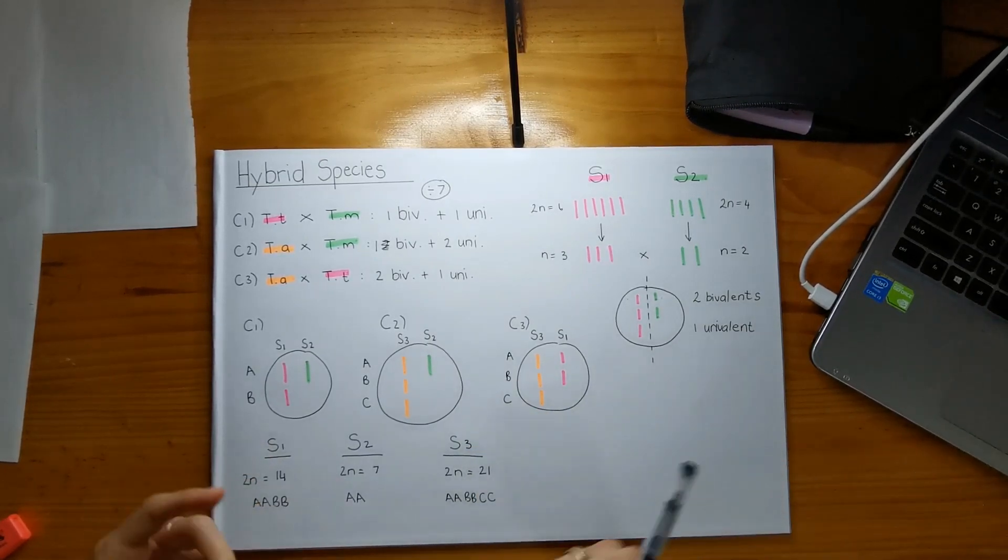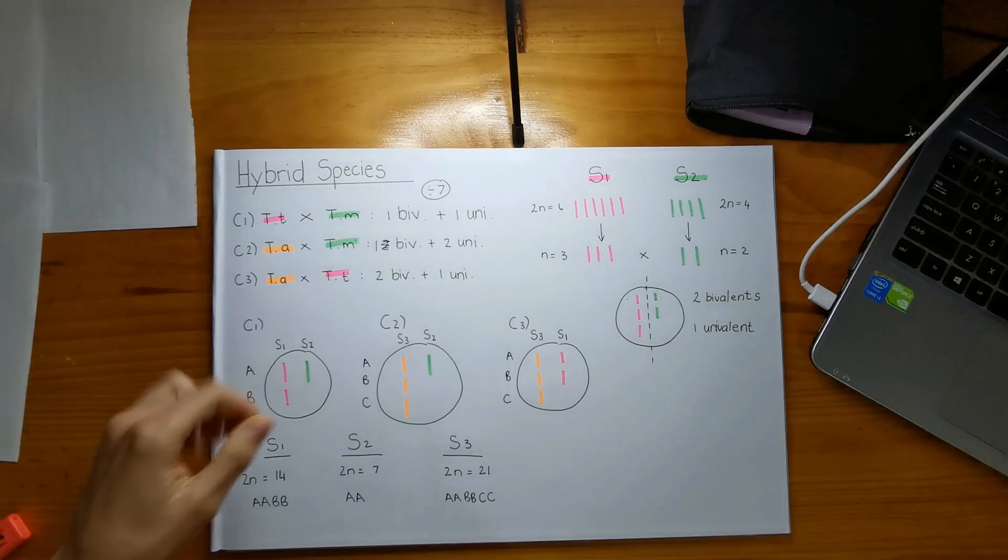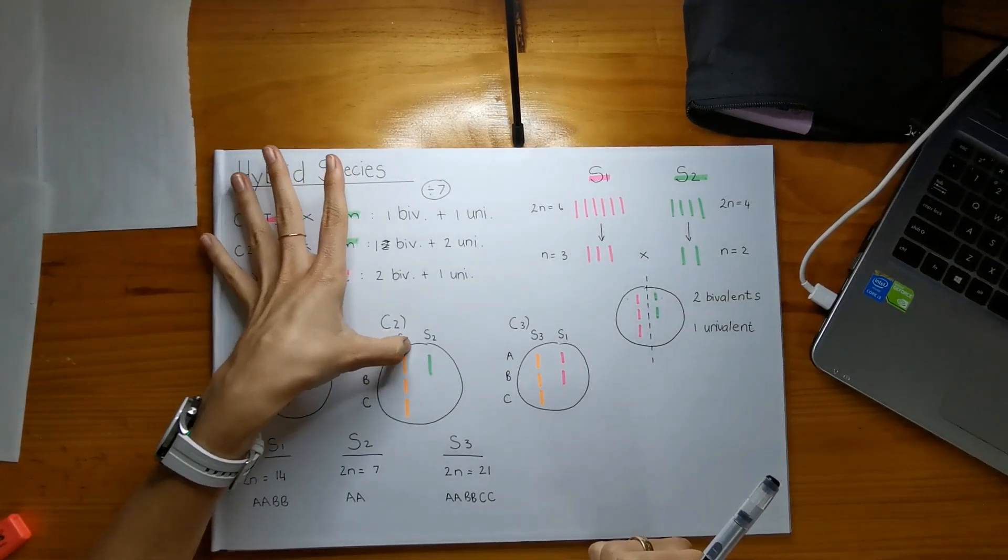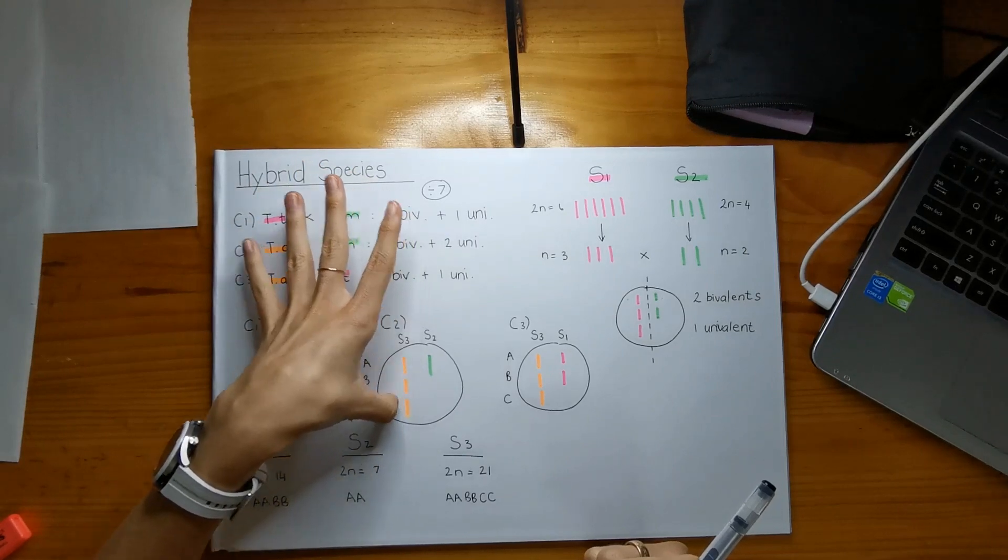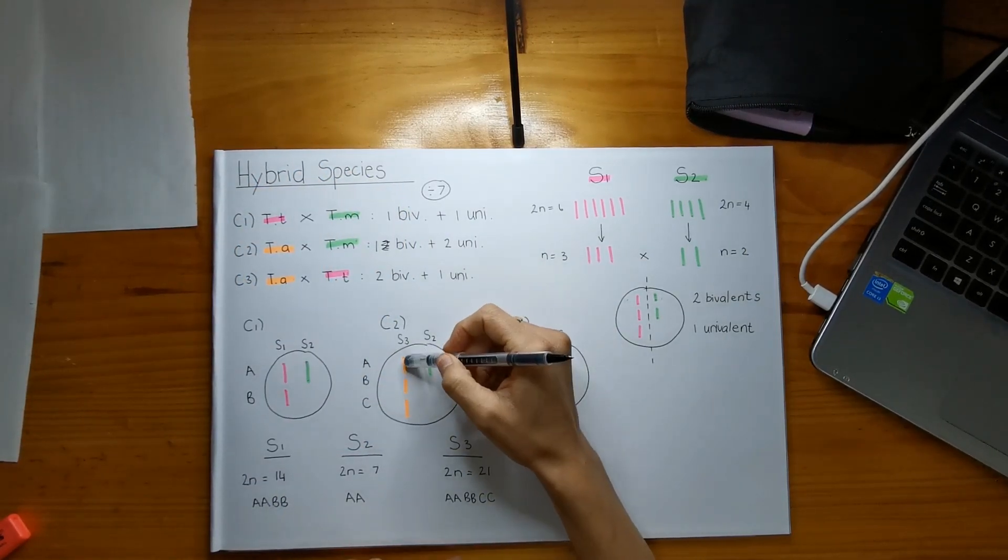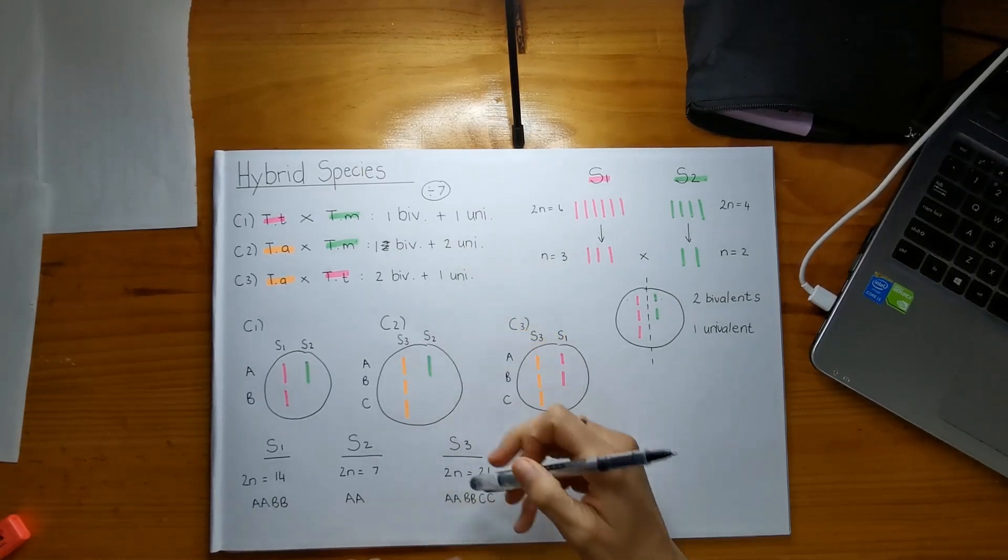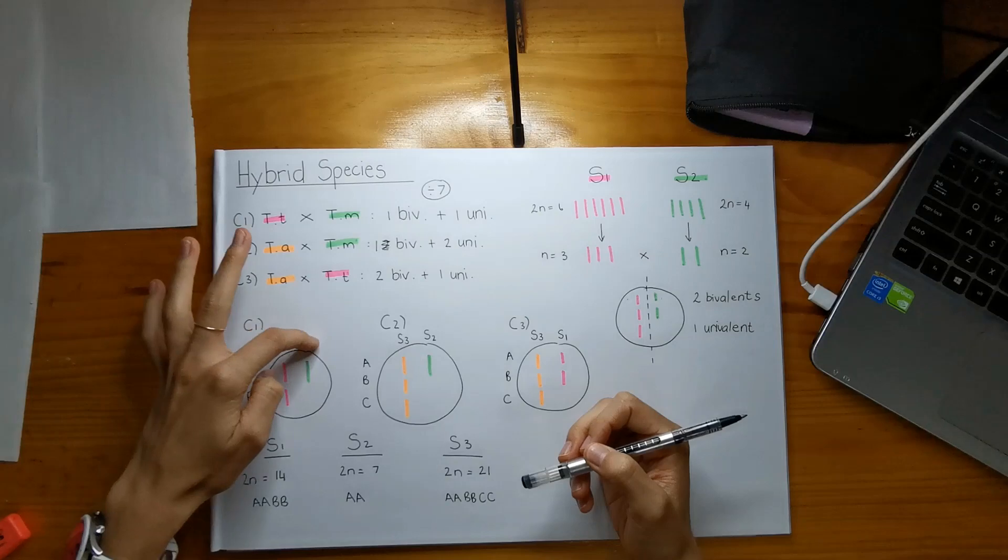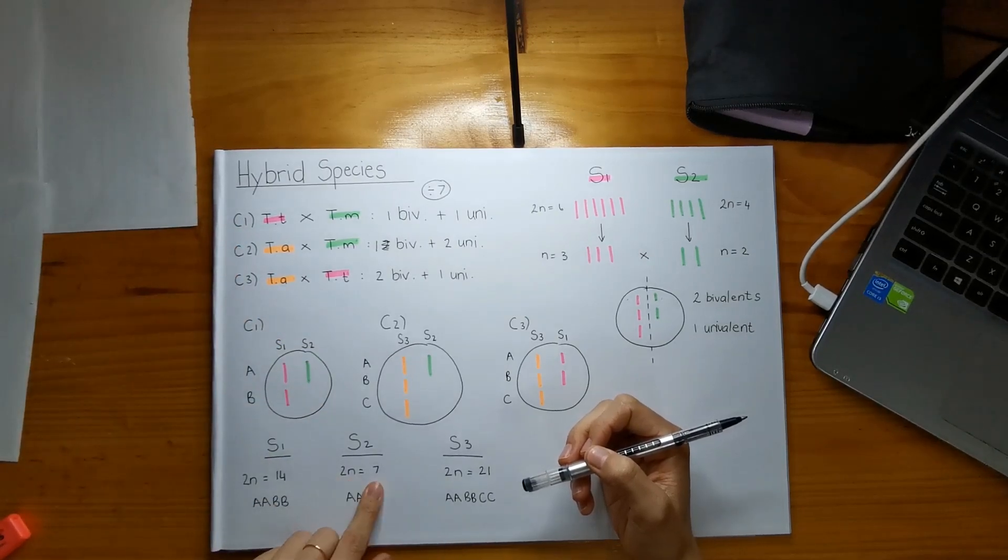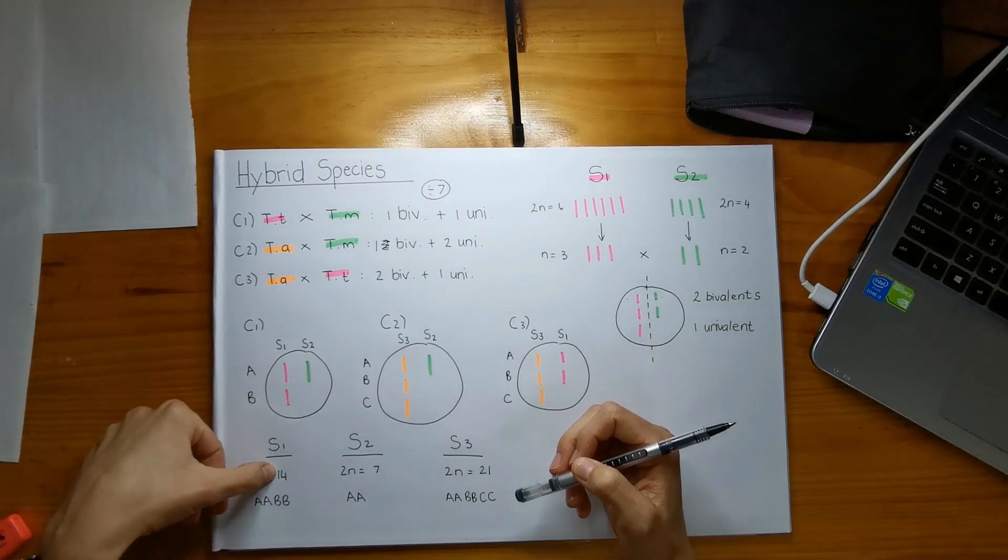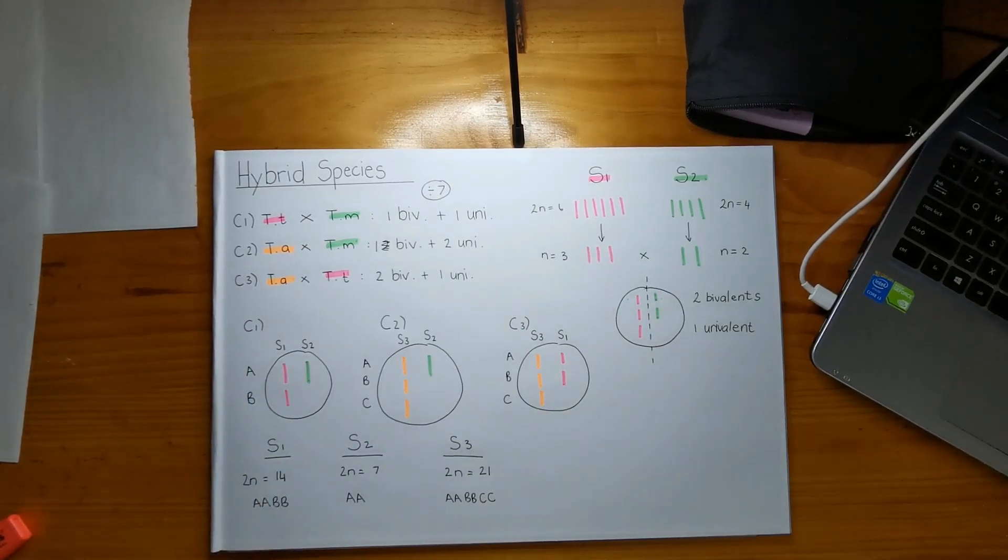And to explain how that works is that if we look here, each of these chromosomes equal seven. So if we look at species three, it has one, two, three chromosomes, three times seven equals 21. If we look at species two, species two only has one chromosome, so that's why it's seven, and species one has two chromosomes, and that's why it's 14. So I hope that kind of makes sense to everyone.